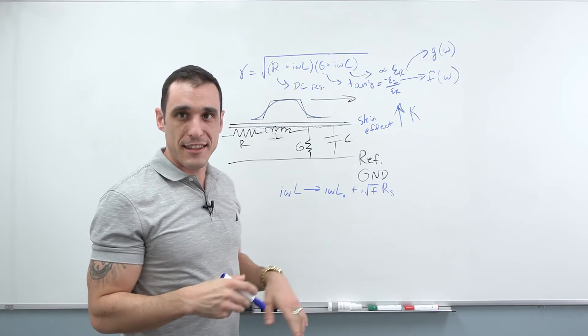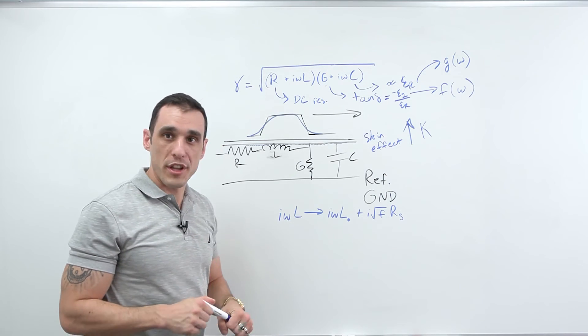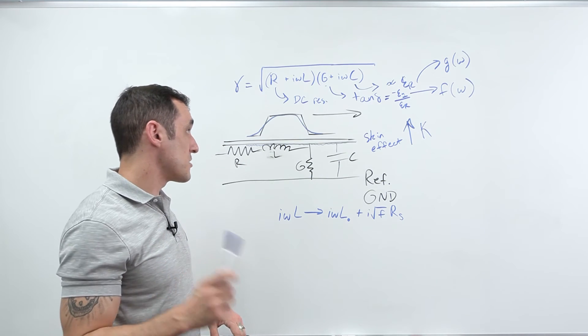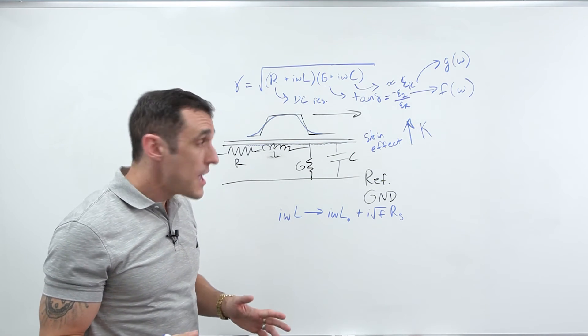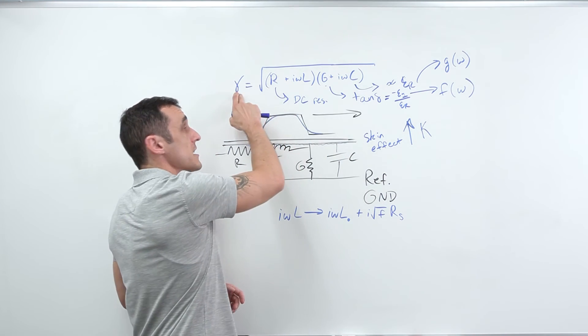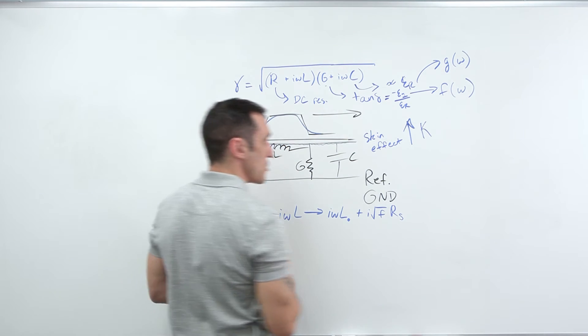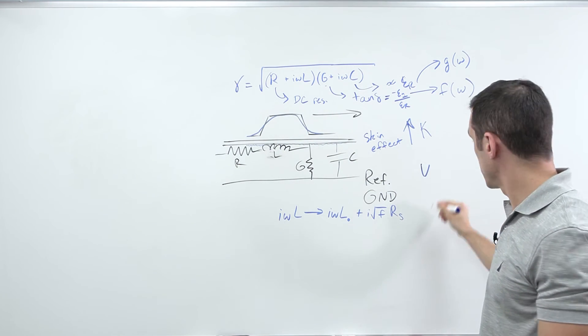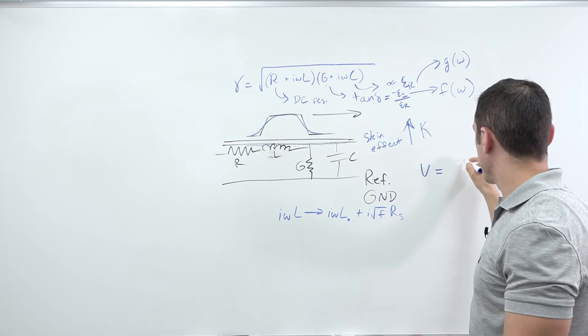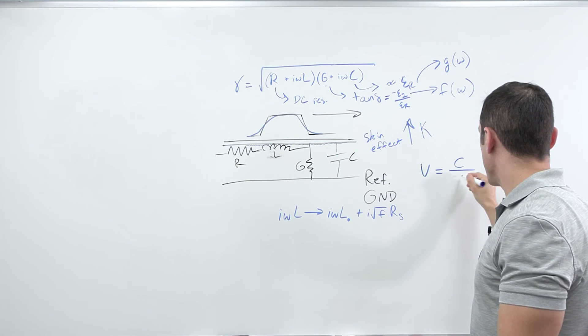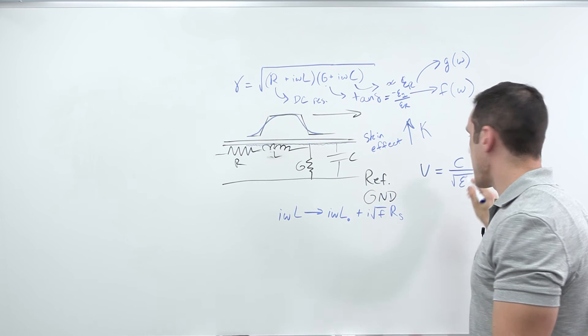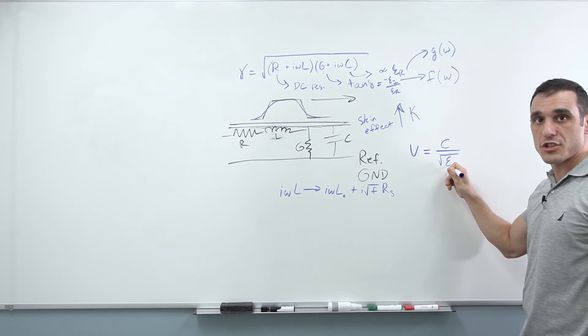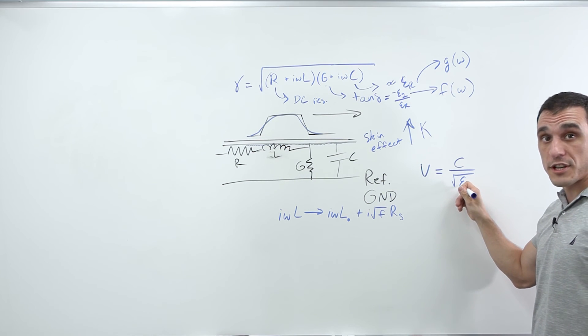And I know there's a lot of math here and a lot of physics. But the important point here to remember, and I think it's important for all designers to remember, is that this value, the propagation constant and the associated velocity. Remember, the velocity is speed of light divided by square root of the dielectric constant. Dielectric constant changes with frequency. This can be different at different frequencies. That means different frequencies will have different propagation constants.